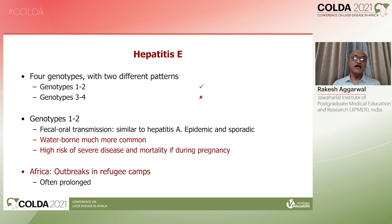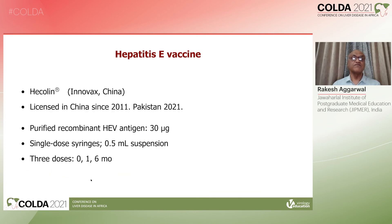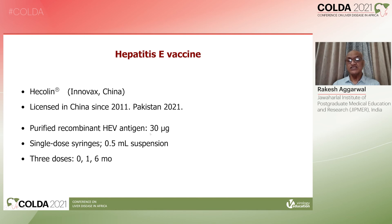Genotype 1 and 2 disease in Africa often occurs in the form of outbreaks in displaced populations, and these outbreaks can often be prolonged, even lasting years. There is one vaccine available, named Hecolin, manufactured in China. It is licensed in China for one decade and has recently been licensed also in Pakistan. It is a subunit vaccine — a single-dose syringe containing 30 micrograms of viral capsid protein — and three doses intramuscular at 0, 1, and 6 months are recommended.